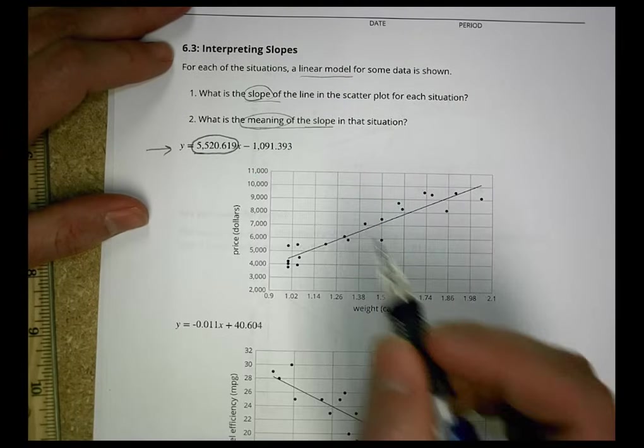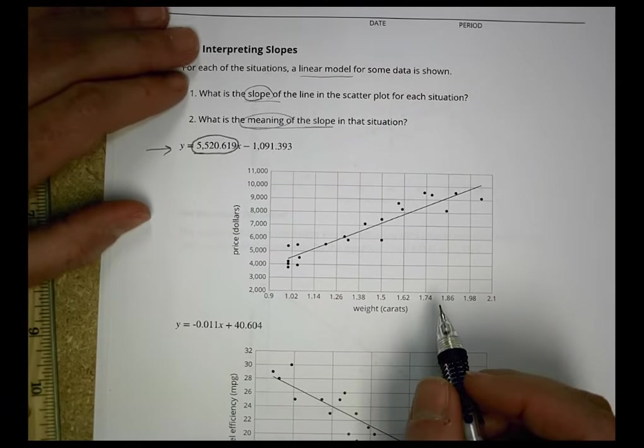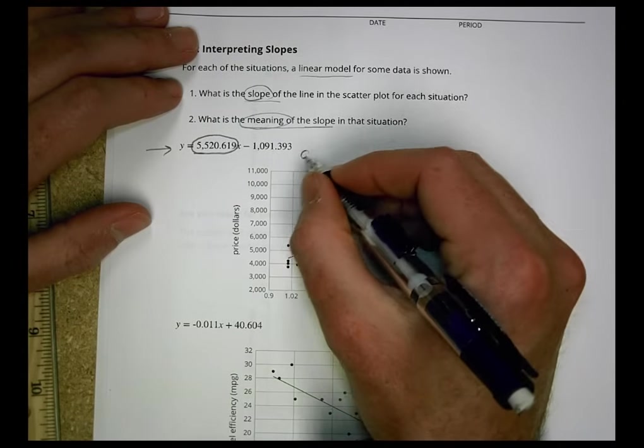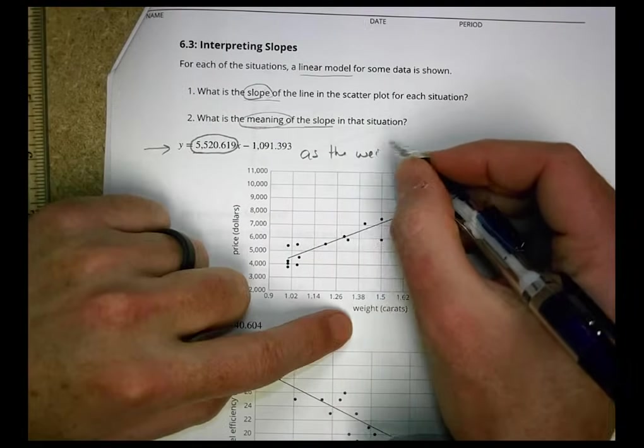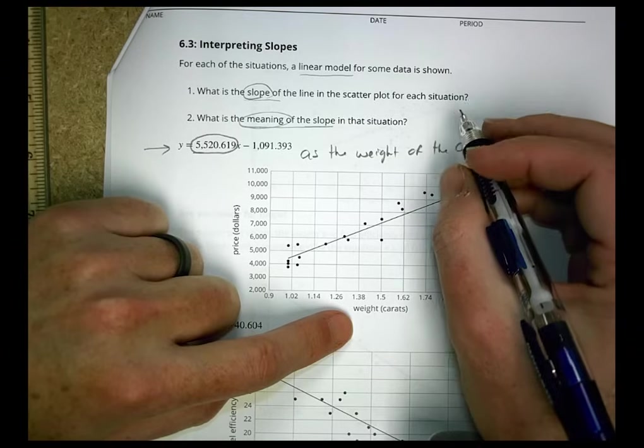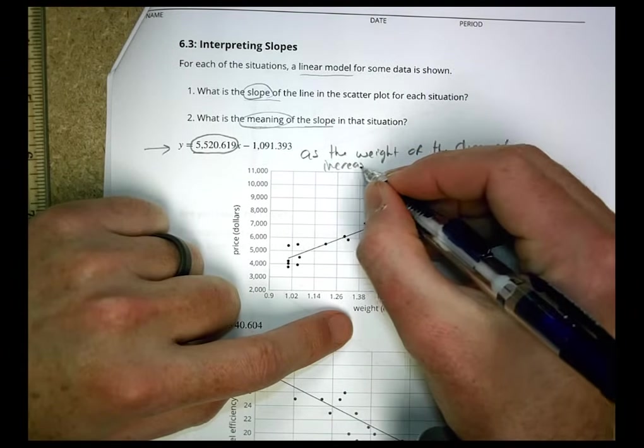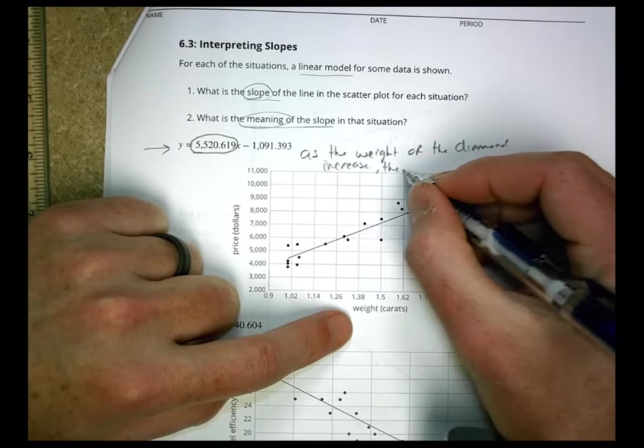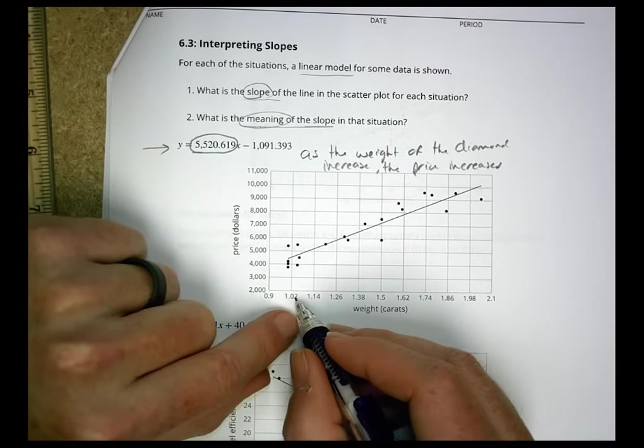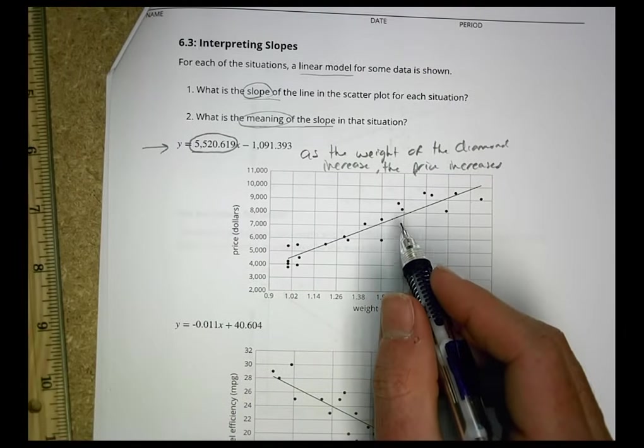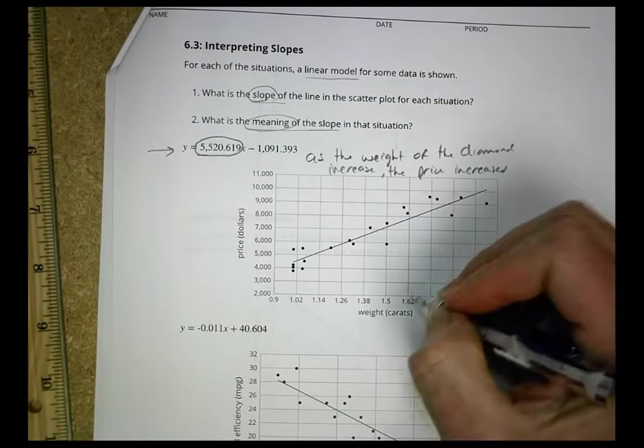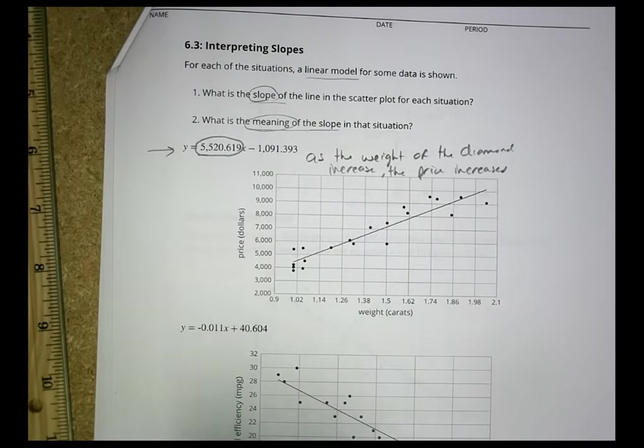So for this first one, the slope is 5,520.619. What does it actually mean? It means as the weight, because we're looking at weight here, of the diamond increases, the price increases. So as this goes up, that goes up. And that's how that works there. So as it goes up by 1, in this case here, really increases by 1 carat, then this goes up by that amount. That's what that's telling me there.